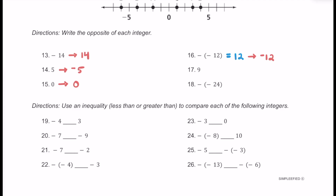For number 17, we have the number 9. The opposite of 9 is going to be negative 9. For number 18, this one's very similar to number 16 — we have the opposite of the opposite of 24. So we have 24, then the opposite, then the opposite of it, and that's really just going to be 24. The opposite of 24 is negative 24.